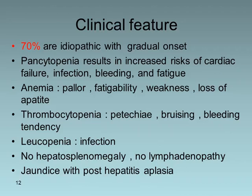Regarding clinical features, in 70 percent of cases it is idiopathic with a gradual onset, and the patient cannot recall being exposed to any offending agent or infection. Pancytopenia results in increased risk of cardiac failure, infection, bleeding, and fatigue. Anemia causes pallor, fatigability, weakness, and loss of appetite. Thrombocytopenia causes petechiae, purpura, and chemosis with bleeding anywhere. Leukopenia leads to infection. Very importantly, there is no hepatosplenomegaly and no lymphadenopathy. Jaundice may be noticed with post-hepatitis aplasia.